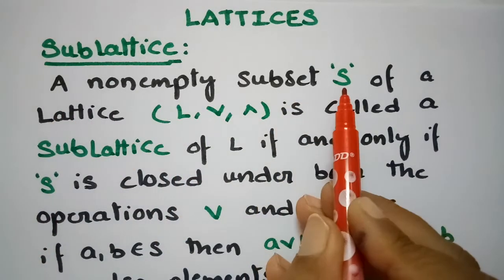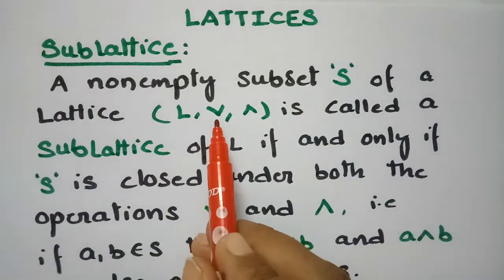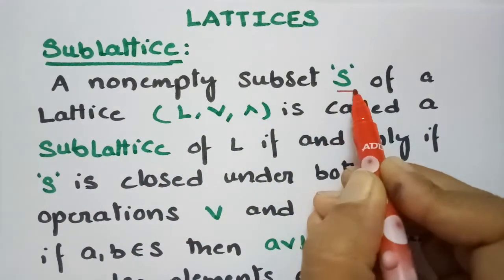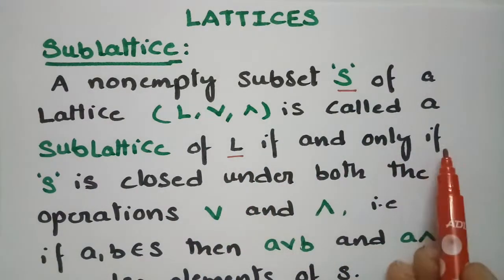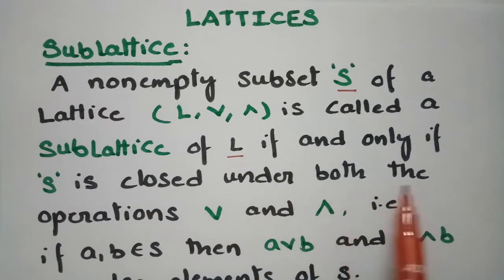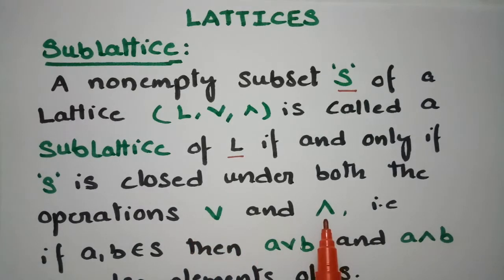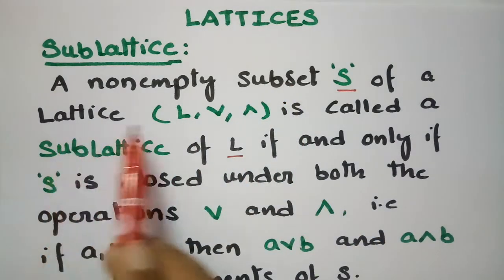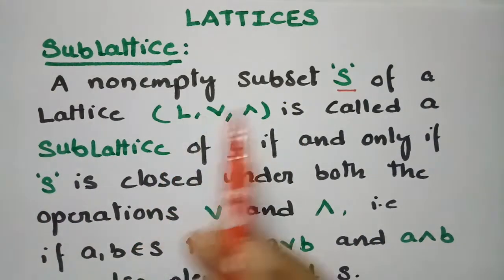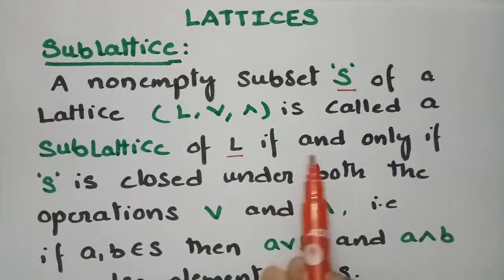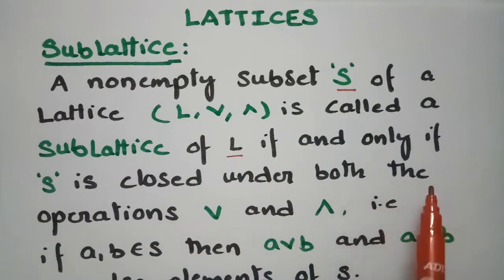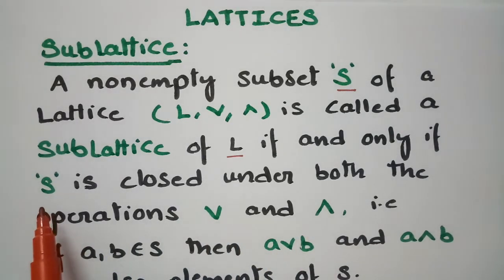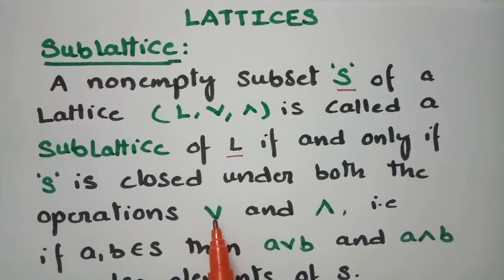A non-empty subset S of a lattice L (join, meet) is called a sublattice of L. S is said to be a sublattice of L if and only if S is closed under both the operations join and meet. S is a non-empty subset of the main lattice L, and S is called a sublattice of L if and only if S satisfies the closure property under the operations join and meet.